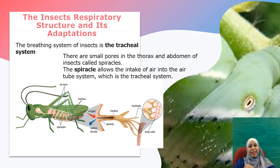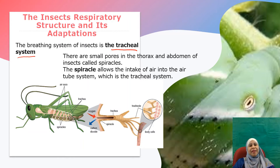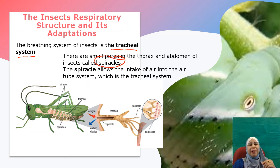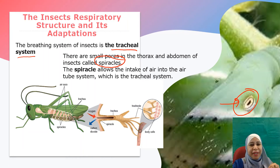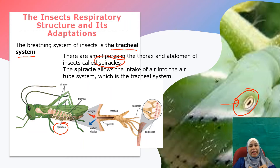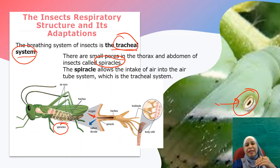Now we look at the insect respiratory structure and its adaptation. The breathing system in insects is called the tracheal system. At the side of the insect, meaning at the thorax area and abdomen area, there is an opening that we call a spiracle. You can see the spiracle at the body of the insect. This spiracle allows the intake of air into the tracheal system, meaning air will enter from outside into the tracheal system through the spiracle.